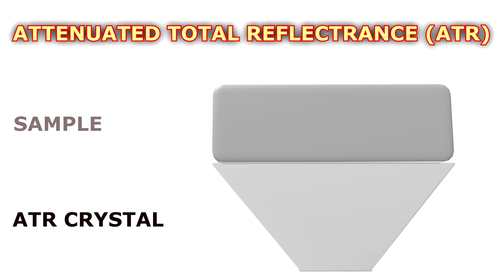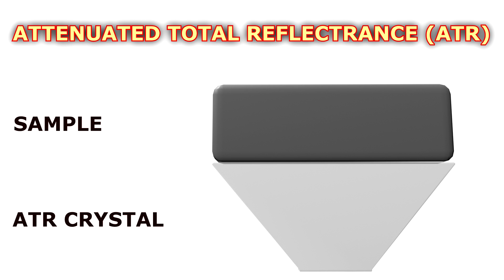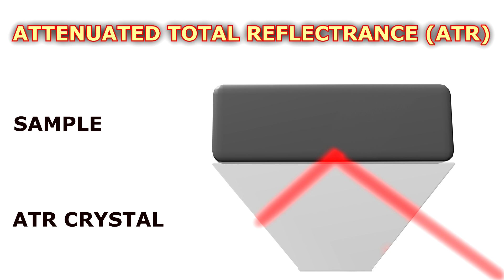In this case, the solid sample is placed on the ATR crystal. When the sample is irradiated with infrared radiation through the crystal, the radiation penetrates up to a few microns deep into the material and gets partly absorbed there, while it is reflected. Eventually, the reflected radiation exits the studied site and can be detected with the detector.